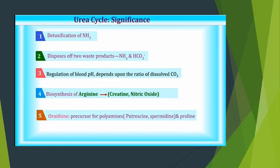Now we briefly discuss the significance of the urea cycle. First, it detoxifies ammonia — ammonia is highly toxic and must be rapidly converted to urea and excreted. Second, it not only disposes of ammonia but also bicarbonates. The carbon dioxide used in the urea cycle is derived from bicarbonates, so the cycle helps regulate blood pH by controlling bicarbonate levels.